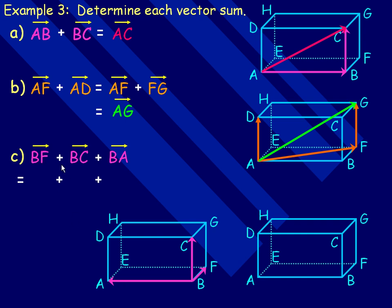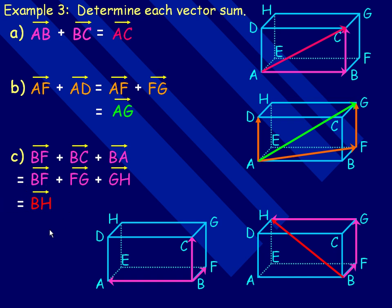In part c, vectors BF, BC, and BA are all tail to tail. I'll start with BF and leave it alone. I draw an equivalent vector to BC starting at the head of BF — that's FG. Then I draw an equivalent vector to BA starting at the head of FG — that's GH. So placed head to tail, the sum vector starts at B and ends at H, giving us vector BH.